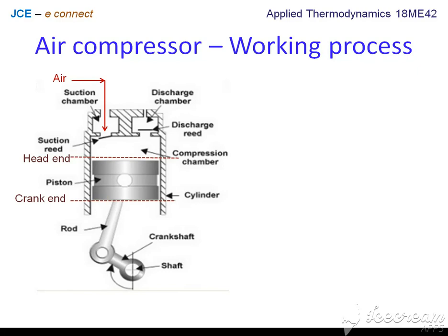Looking at the working process, the working of an air compressor can be divided into four processes. Number one is the suction process, during which the inlet valve opens at the suction chamber and air from the atmosphere is let into the cylinder. This happens because of the pressure difference between the ambient pressure and the pressure prevailing inside the cylinder. During this process, the piston moves from the head end to the crank end at a constant pressure condition.